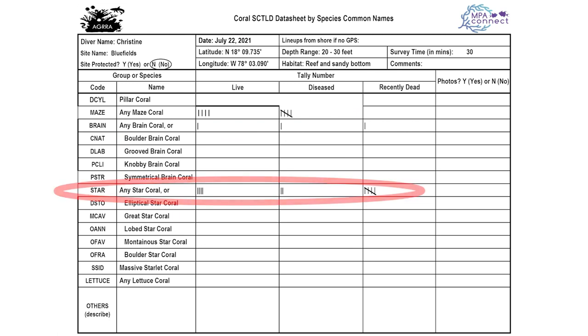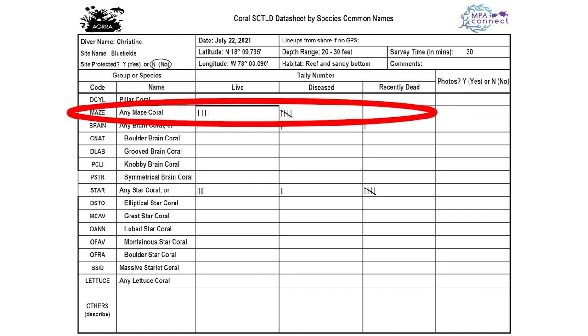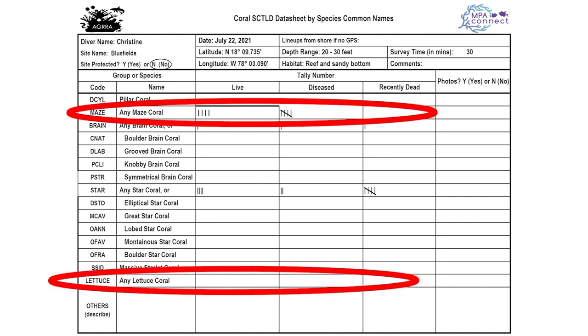Pillar corals and massive starlet corals should be easy to unambiguously recognize at most sites, and the simple data sheet doesn't require learning the common names for the maize and lettuce corals.